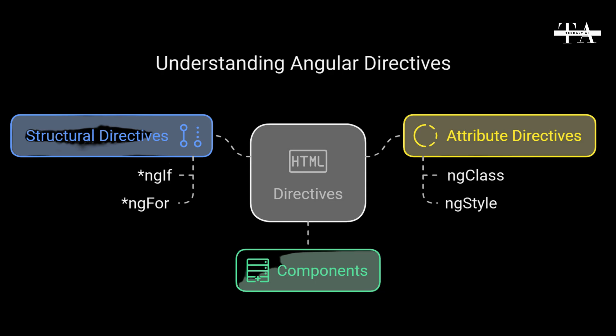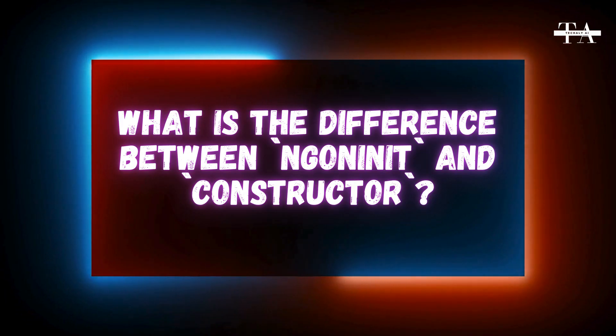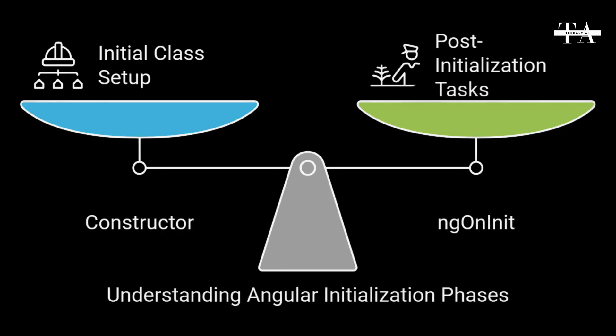What is the difference between ngOnInit and constructor? The constructor is a TypeScript feature that initializes class members and is called when the class is instantiated. ngOnInit is a lifecycle hook provided by Angular that is called after the component's constructor and after Angular has initialized all data-bound properties. It is used for additional initialization tasks.